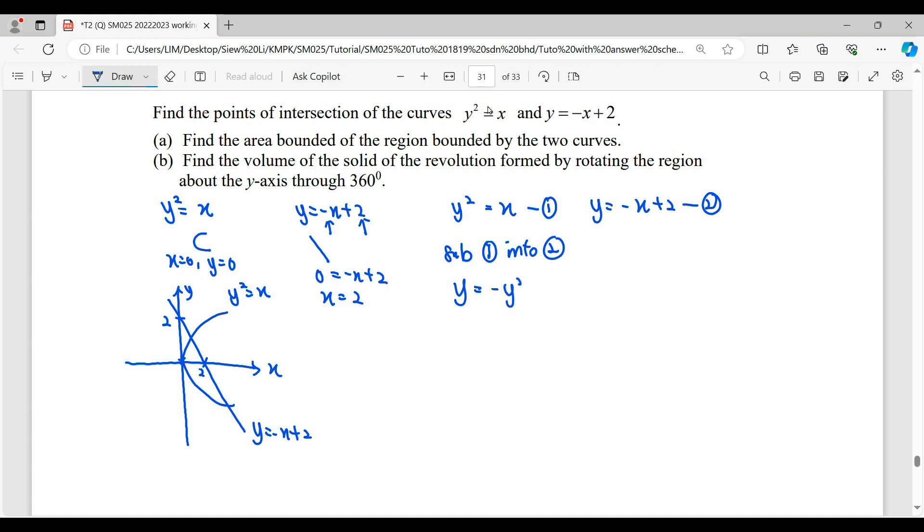So y will be equal to -y² + 2. Rearrange this quadratic. Then we factorize to find out the y. So once we find out the y value, we can find out the coordinate of x. x equals y².